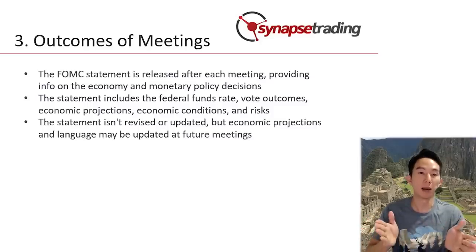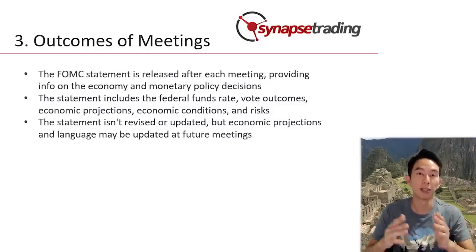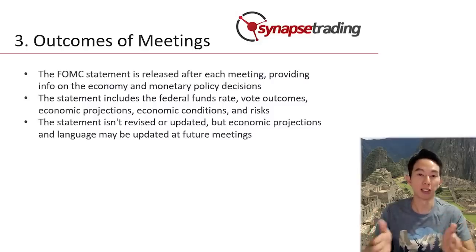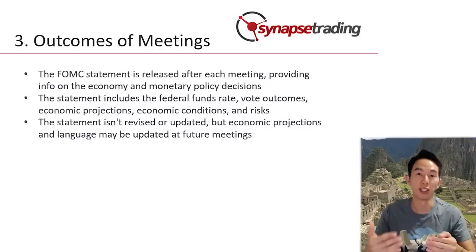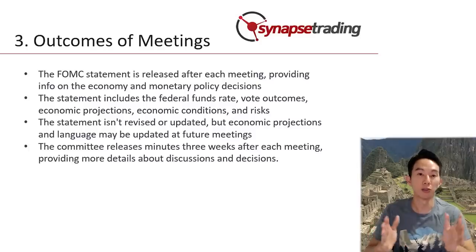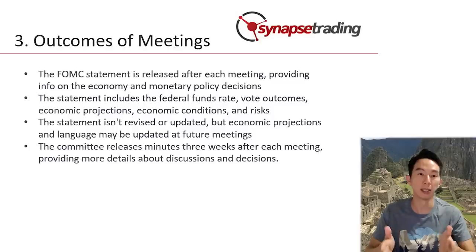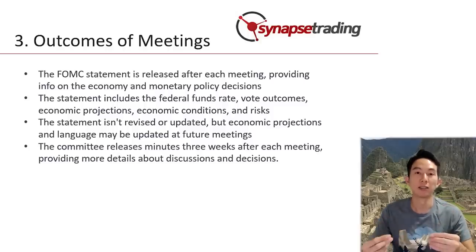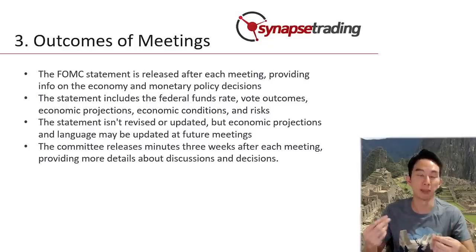The data published in the FOMC statement is not revised or updated after the meeting, but the committee releases new economic projections and updates the statement language at each meeting. The committee also releases the minutes of the meeting three weeks after the meeting, which provides a more detailed analysis of the discussions and the reasoning behind the decisions.